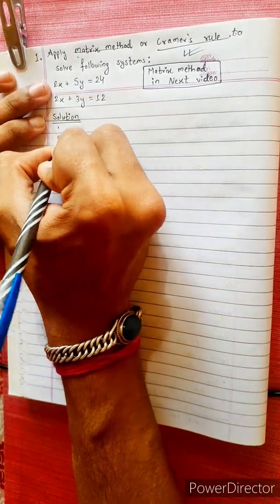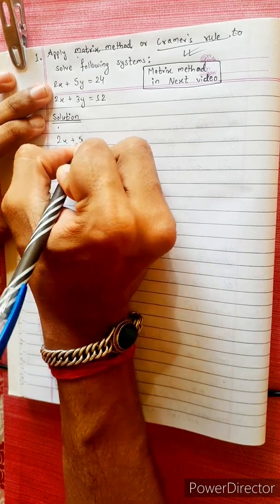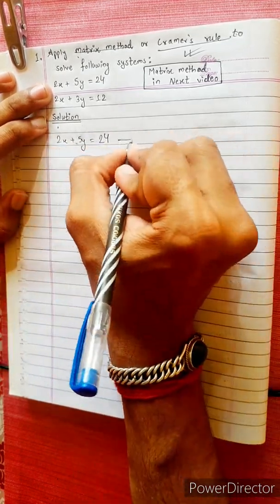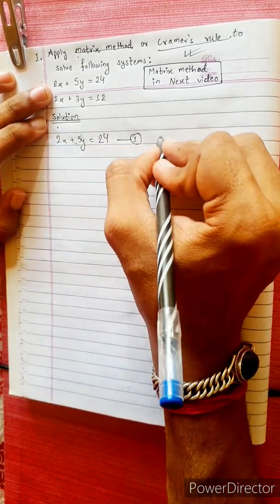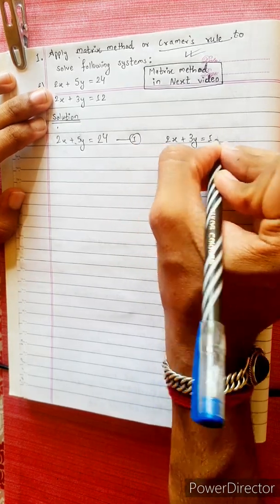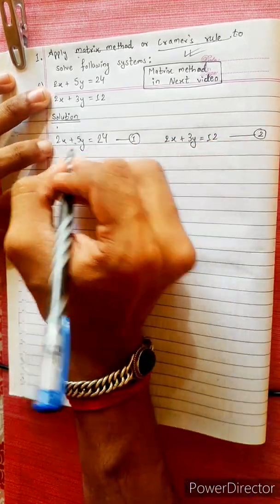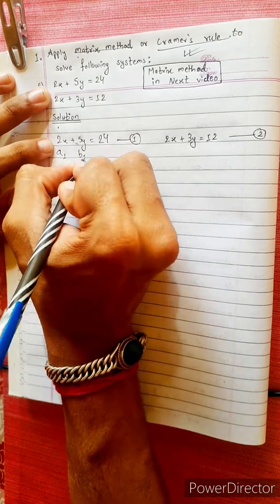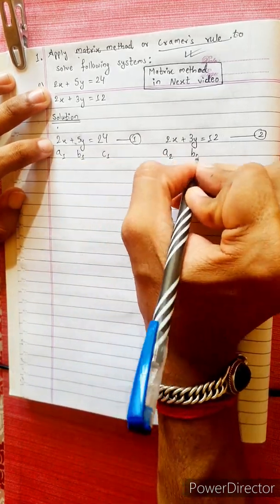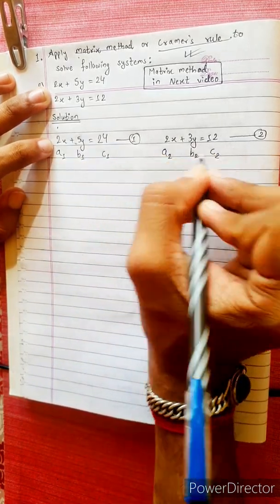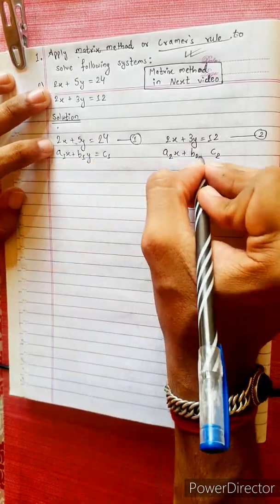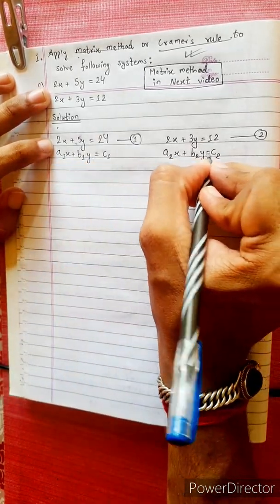Let's look at equation 1: 2x plus 5y equals 24. And equation 2: 2x plus 3y equals 12. We compare these to the general form: a1x plus b1y equals c1, and a2x plus b2y equals c2.